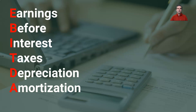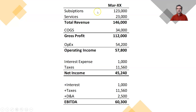EBITDA stands for Earnings Before Interest, Taxes, Depreciation, and Amortization. So how do we calculate this? Let's take a look at our simplified P&L. On the top we have total revenue, less our COGS equals our gross profit, less our operating expenses equals operating income. We have some interest expense — maybe we've taken on some debt — paid some taxes, resulting in our net income.